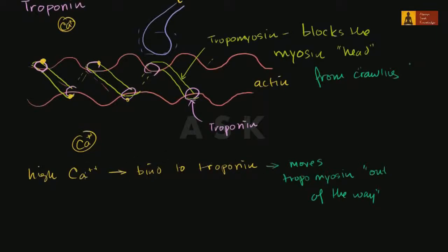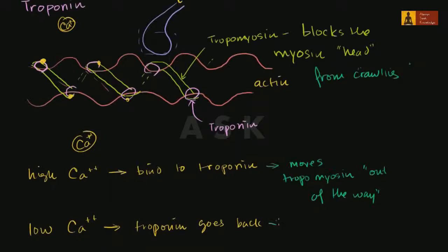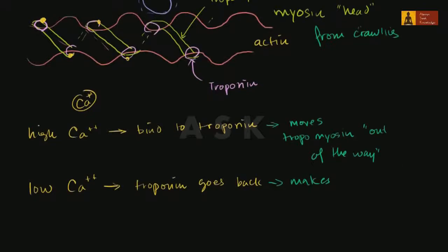So when tropomyosin moves out of the way — with high calcium concentration bonding to troponin and moving tropomyosin aside — the myosin heads can start walking up the actin, pushing the actin. But if the calcium concentration goes low, the calcium ions get released from the troponin. When the concentration becomes low, they leave, and the troponin returns to its standard conformation, which allows the tropomyosin to block the myosin again.